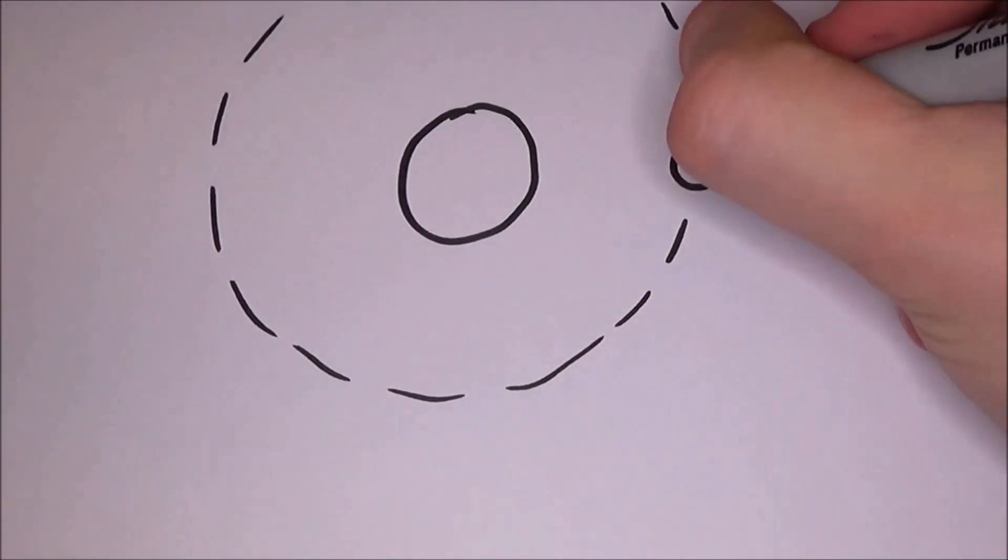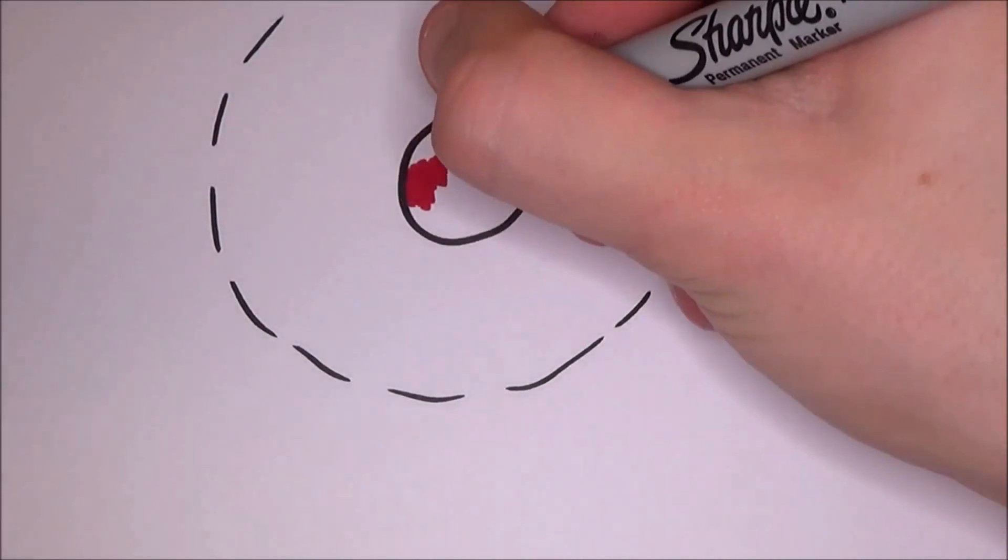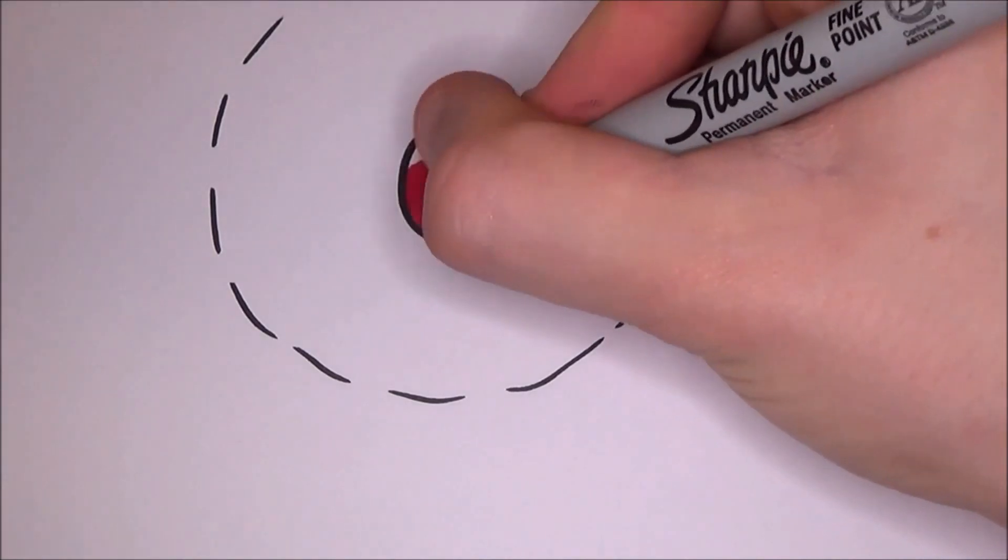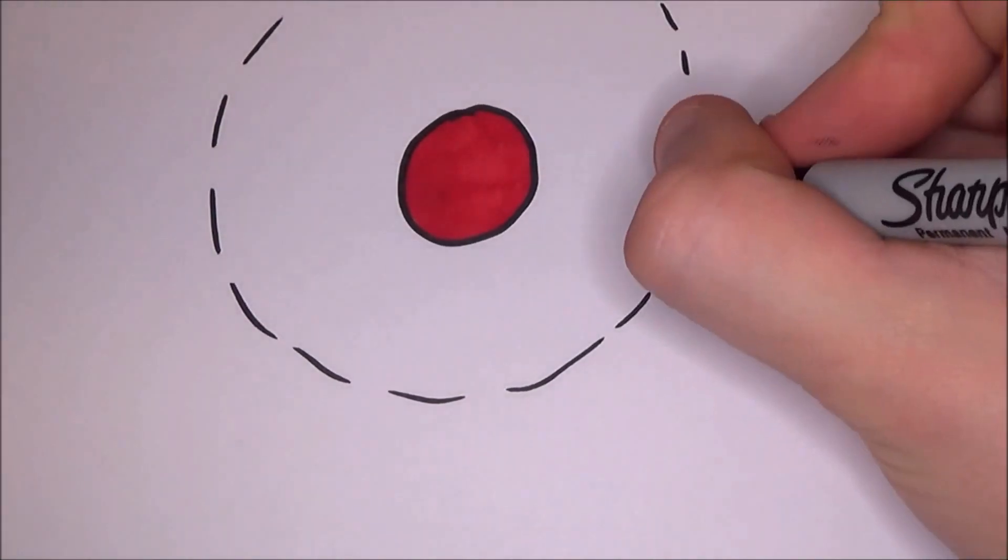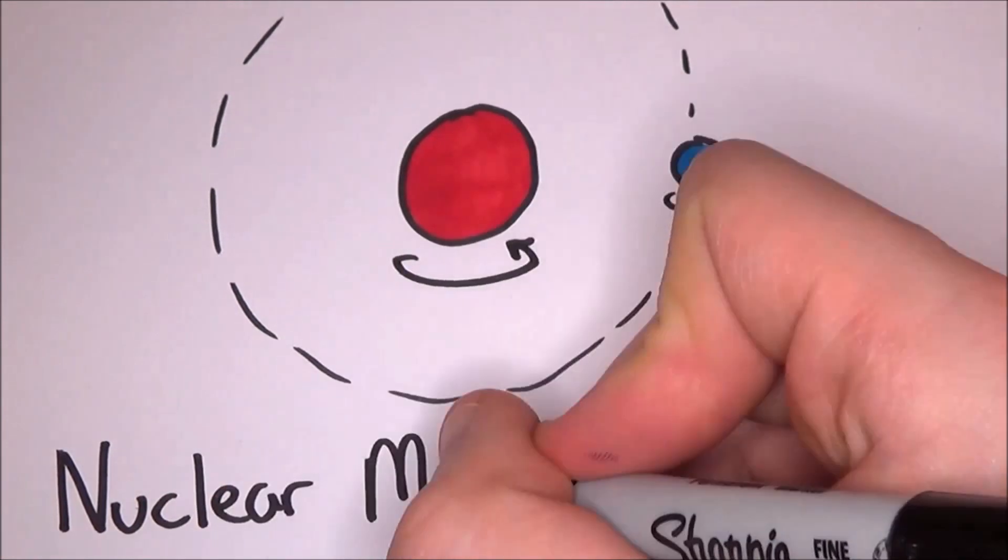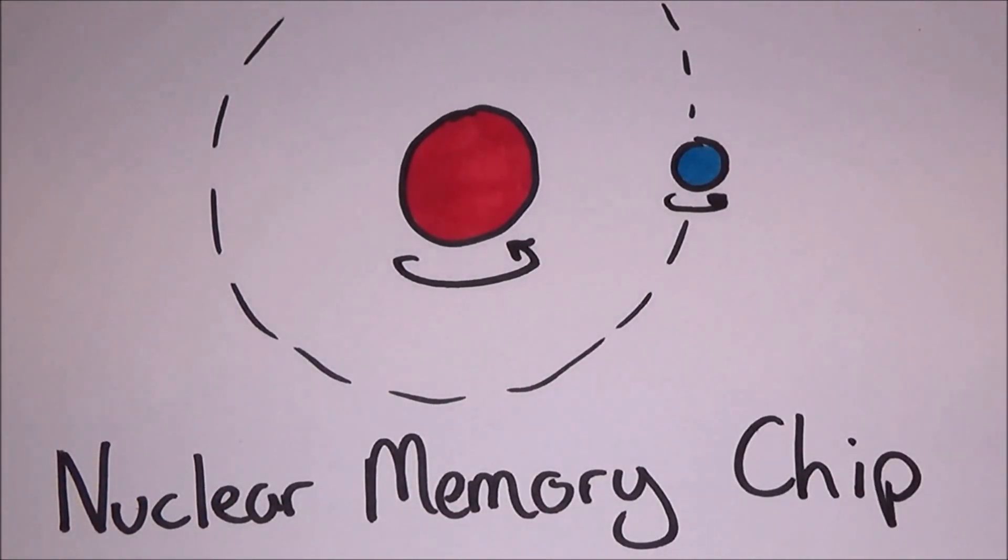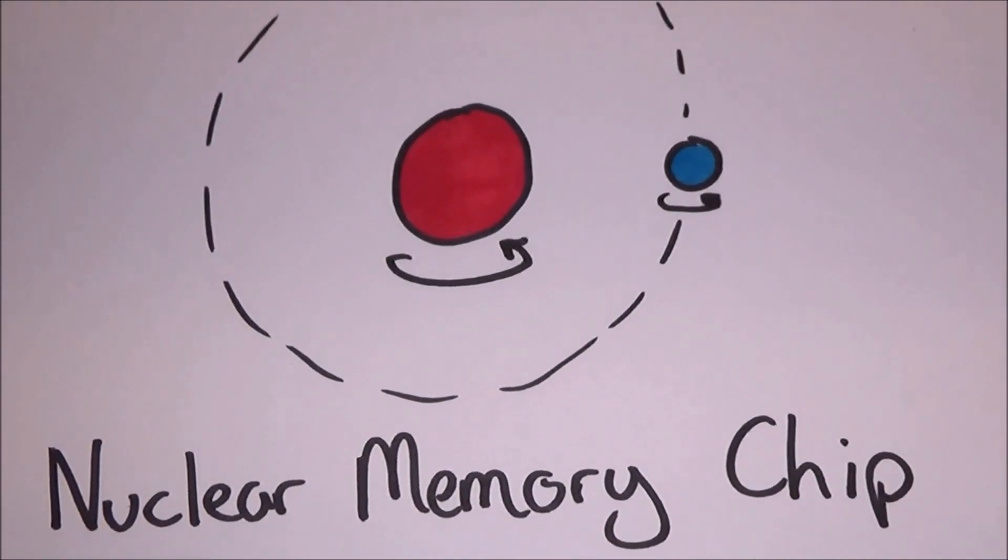But the spin of an electron is linked to the spin of the nitrogen nucleus as well. You can also send information from the electron into the core and it will store it. So what you have built is a nuclear memory chip. Don't be confused by the nuclear in the sense of radioactivity, just the fact that it uses the atoms nuclei.